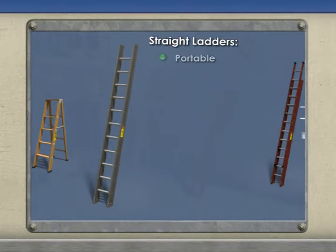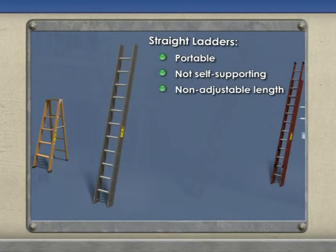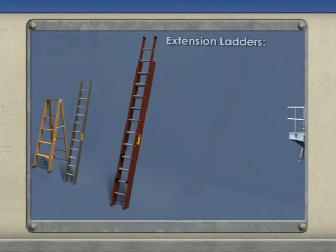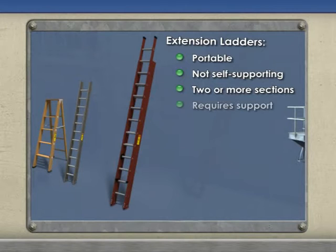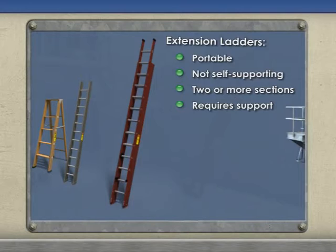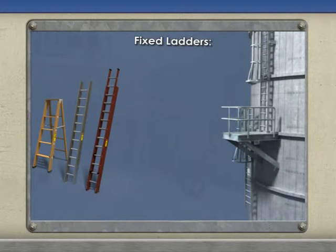Straight ladders are portable ladders that are not self-supporting and are made of a single section that is not adjustable in length. They are used to reach items on a structure that is supplying the support for the ladder. Extension ladders are not self-supporting ladders that consist of two or more sections traveling in guides to allow height adjustment.